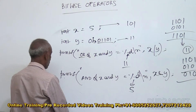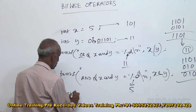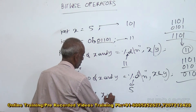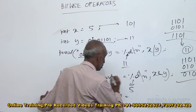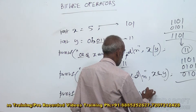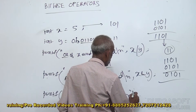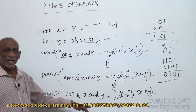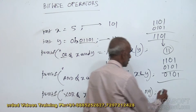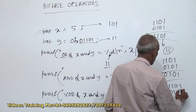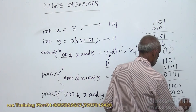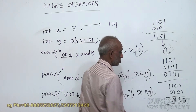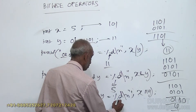Similarly, for Exclusive OR: printf("XOR of x and y = %d", x ^ y). x is 1101 and y is 0101. XOR gives 1000, which is 0010 — wait, the result is 0100, equal to 4 in decimal. So the output will be 4.